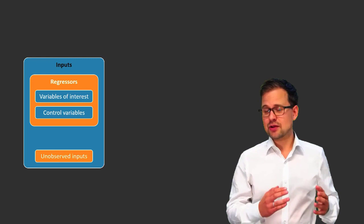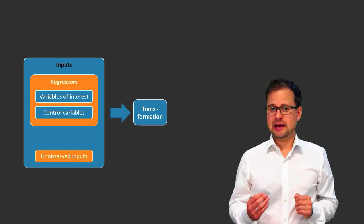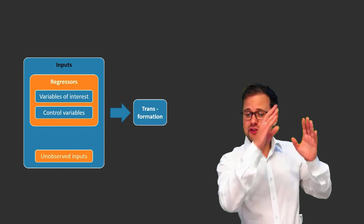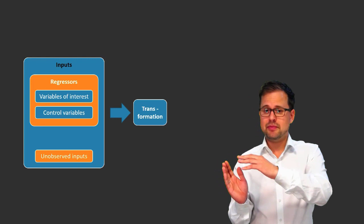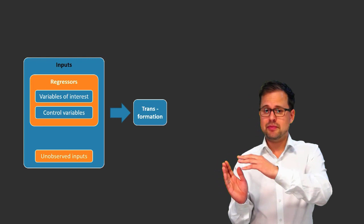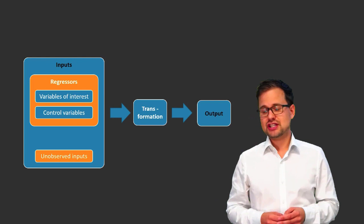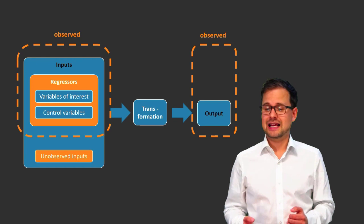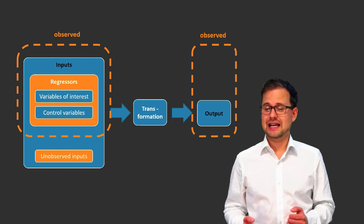All of these inputs are fed into some transformation process. We are not going to go into the exact mechanisms of this transformation process — we'll just treat it as a black box, or a blue box if you will. For each configuration of inputs, this blue box gives us a certain amount of output. In the context of the linear regression model, we don't call it output — we call it outcome. The outcome is observed, just like the regressors. So the model has observed components (regressors and outcome) and unobserved components (the unobserved inputs).